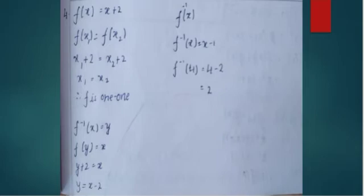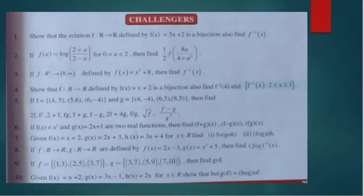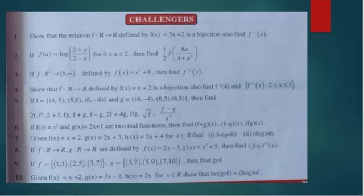Now let's discuss the fifth question. f = {(4,5), (5,6), (6,-4)} and g = {(4,-4), (6,5), (8,5)}. Find 2f, 2f + g, and other combinations — it's a long question but we will work through it.